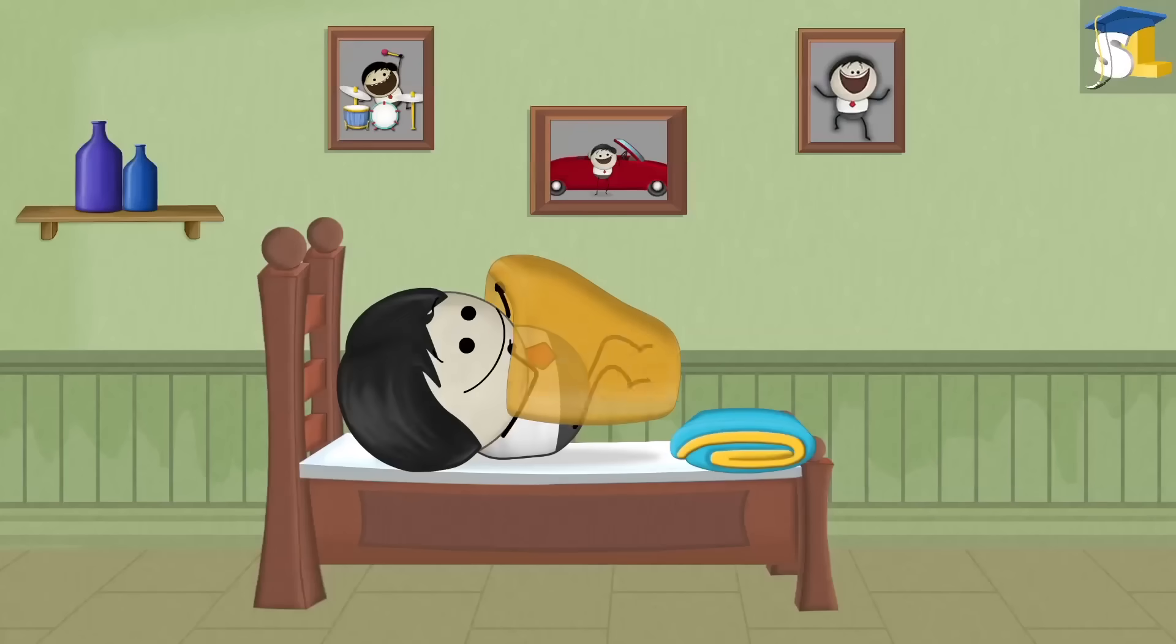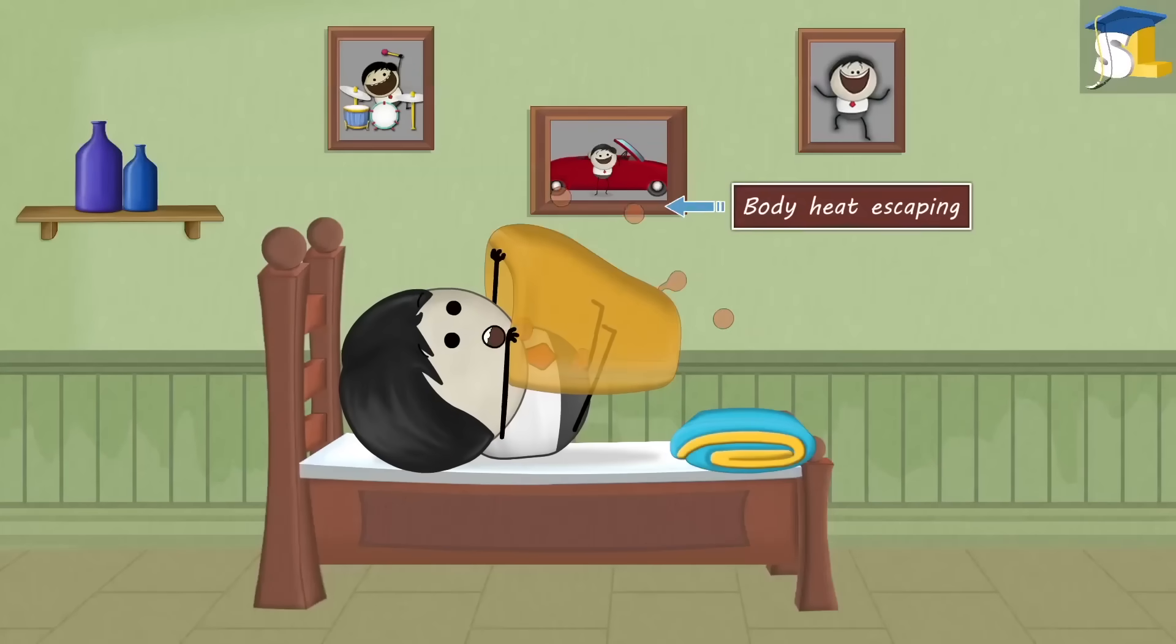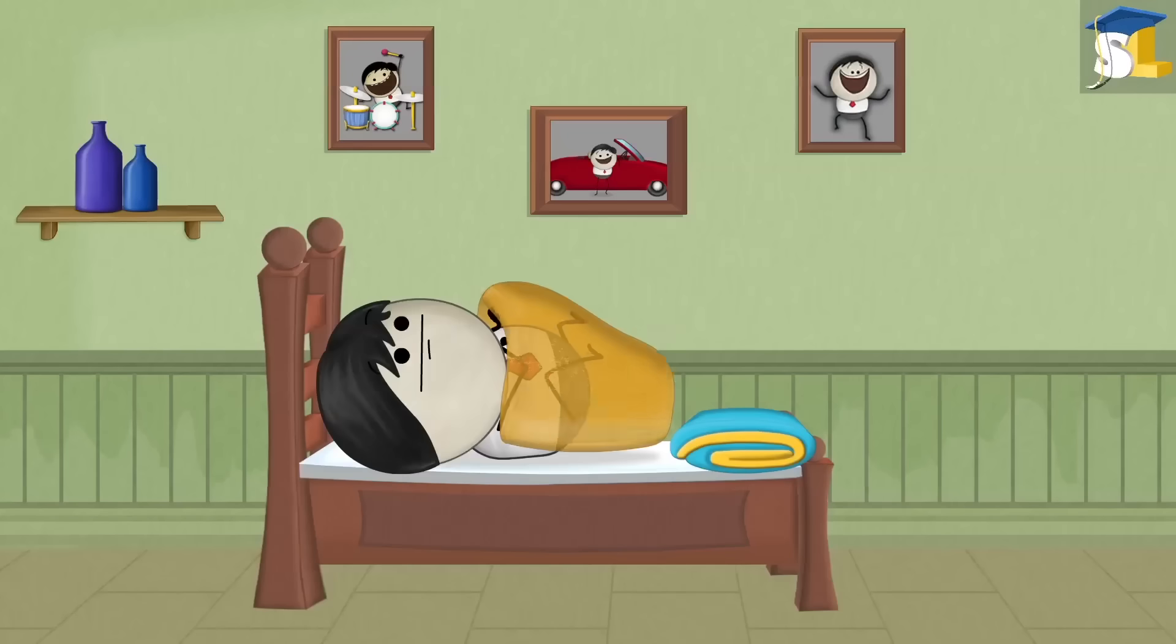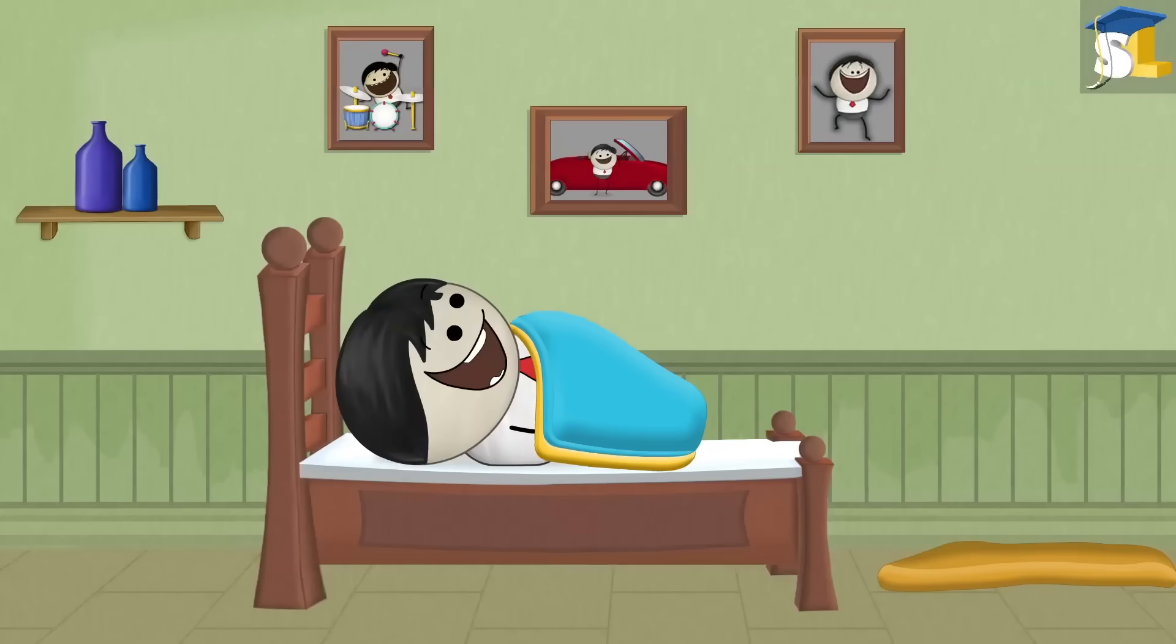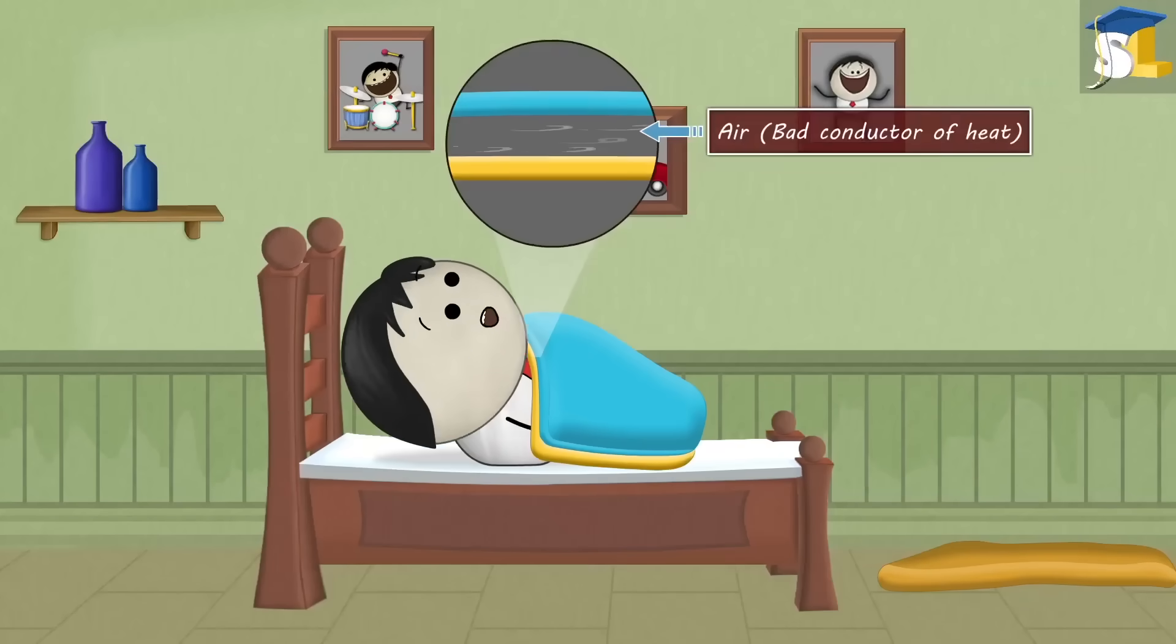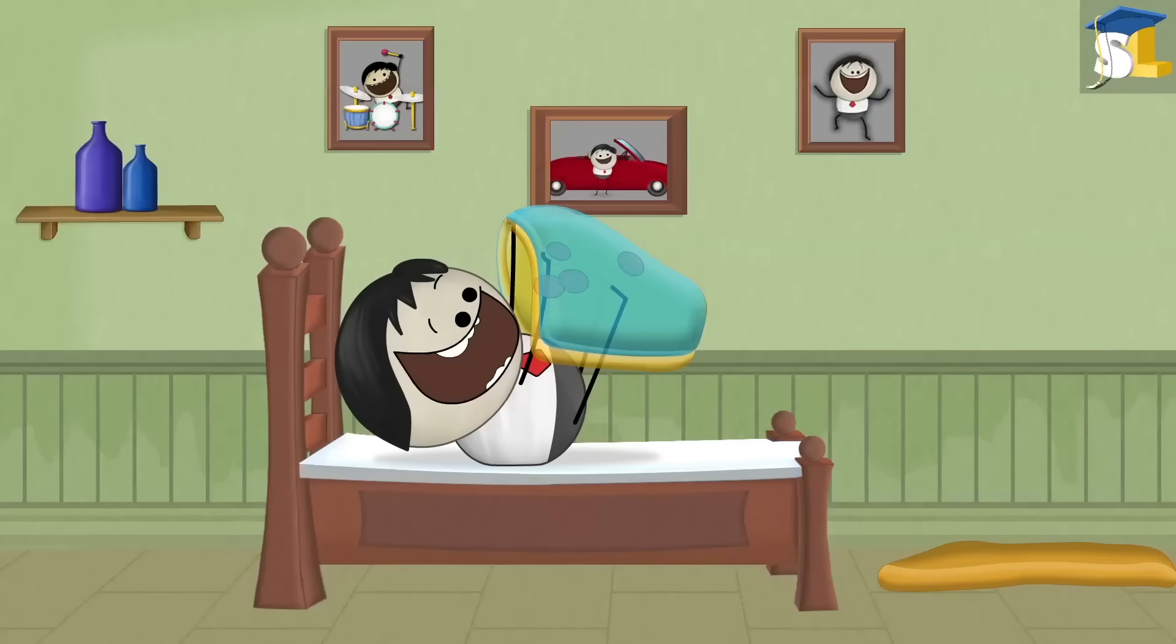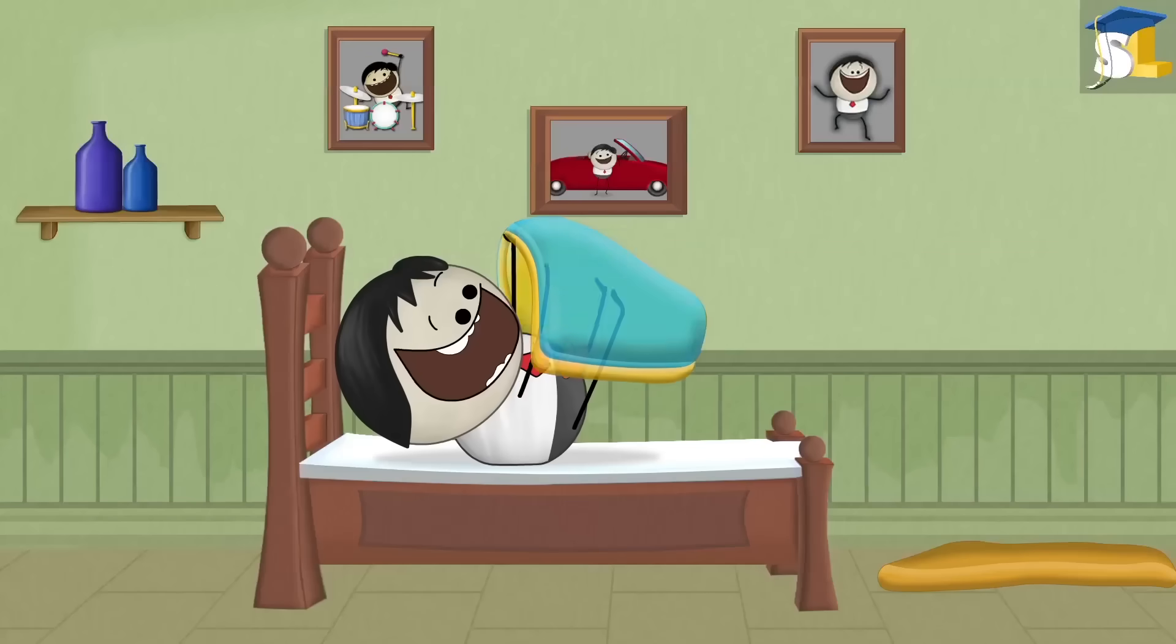A thick blanket allows much of our body heat to escape into the atmosphere. However, when we use two blankets one on top of the other, air gets trapped between them. This air being a bad conductor of heat does not allow our body heat to easily flow into the atmosphere. Thus, keeping us warm.